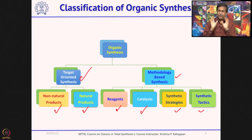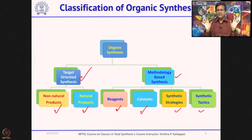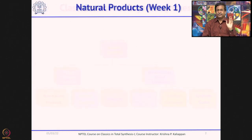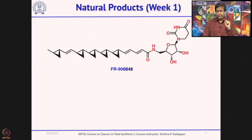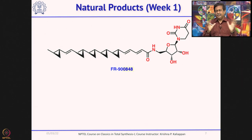Broadly, when you talk about organic synthesis, there are two types: target-oriented synthesis and methodology-based synthesis. Both are interrelated and depend on each other. The first two lectures will be mainly on introduction, and from the third lecture onwards we will start talking about total synthesis of natural products.